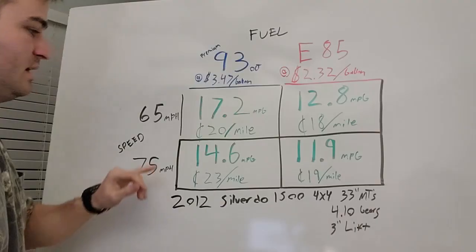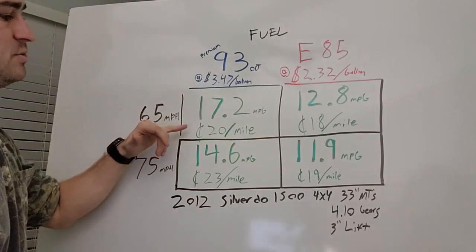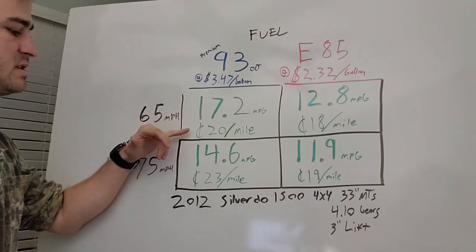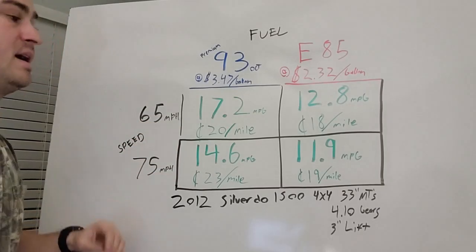How many cents per mile it was with the 93 octane coming up to 20 cents a mile at 65 miles per hour and then 23 cents a mile at 75 miles per hour.